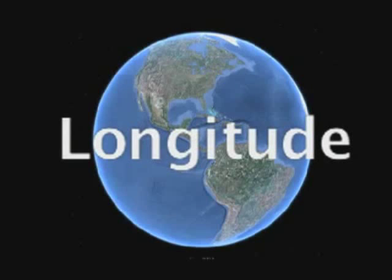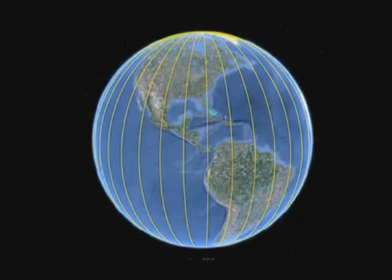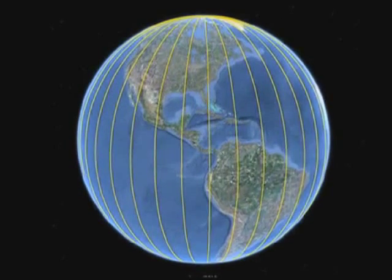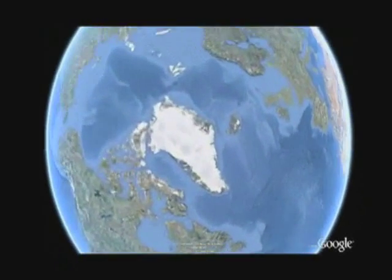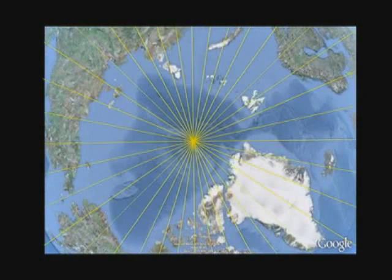Longitude. The lines that run north and south are called meridians of longitude. These lines are measured the same way as parallels of latitude using degrees, minutes and seconds. However, unlike latitude, lines of longitude are not equidistant from each other. Meridians intersect at the north and south pole.